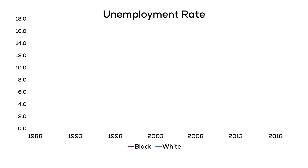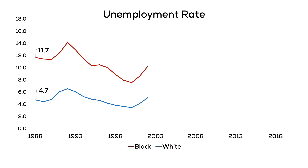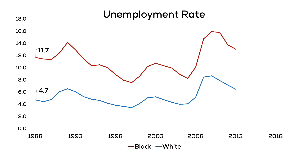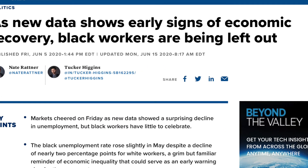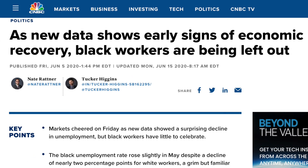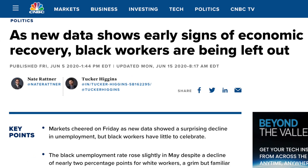The more extreme comparison — and something economists are spending a lot of time trying to understand — is the difference between the white and black unemployment rates. In 1988, the black unemployment rate was more than double the white unemployment rate. The racial gap has narrowed since; however, in 2020 the gap increased again.